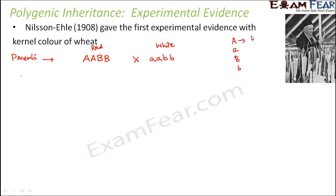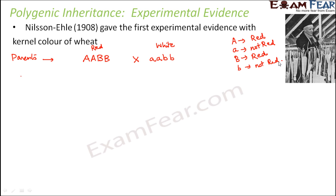Presence of capital A means it is adding red color to the kernel. Presence of capital B also means it is adding red color to the kernel. But if you have the recessive alleles present — like small a — that means it is not red. Similarly, if you have small b present, that also means it is not red. So if you have more capital letters, that is more dominant alleles, they all contribute more to the red color. And if you have more recessive alleles, they are not contributing to the red color.